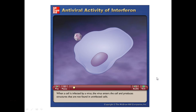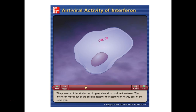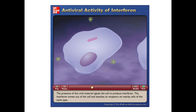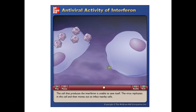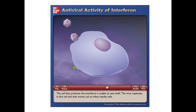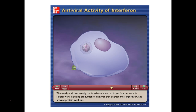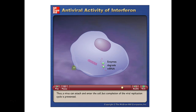When a cell is infected by a virus, the virus enters and produces structures not found in uninfected cells. The presence of this viral material signals the cell to produce interferon. Interferon moves out of the cell and attaches to receptors on nearby cells of the same type. The cell that produced the interferon cannot save itself — the virus replicates and moves out to infect nearby cells. But those nearby cells that already have interferon bound produce enzymes that degrade messenger RNA and prevent protein synthesis, stopping viral replication.